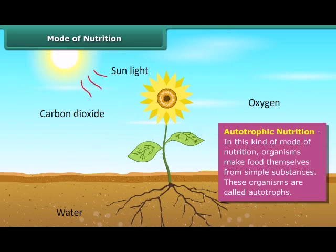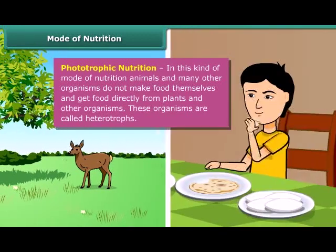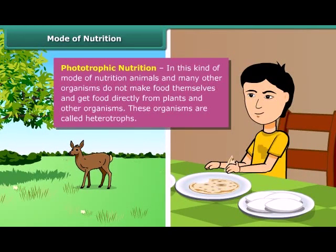Green plants are examples of autotrophs. Heterotrophic nutrition is the mode of nutrition in which animals and many other organisms take in ready-made food prepared by plants. This is called heterotrophic nutrition, and these organisms are called heterotrophs. Humans, lions, tigers, etc. are examples of heterotrophs.